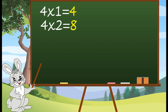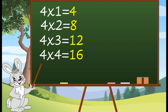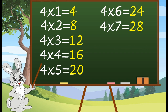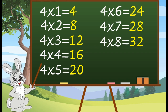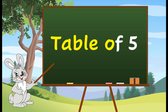4 2's are 8. 4 3's are 12. 4 4's are 16. 4 5's are 20. 4 6's are 24. 4 7's are 28. 4 8's are 32. 4 9's are 36. 4 10's are 40.